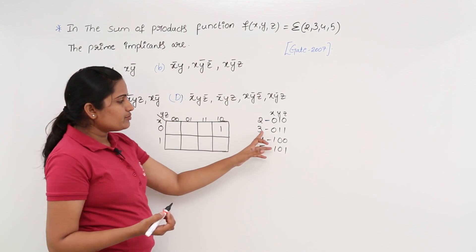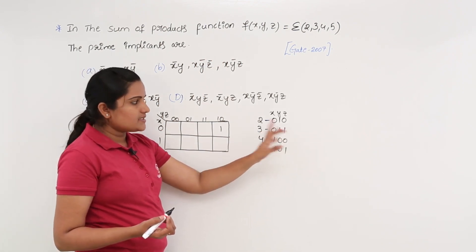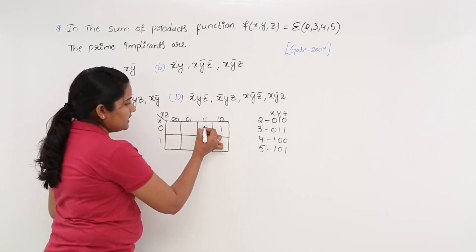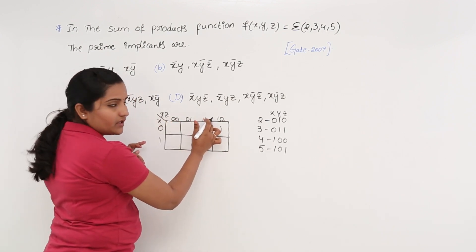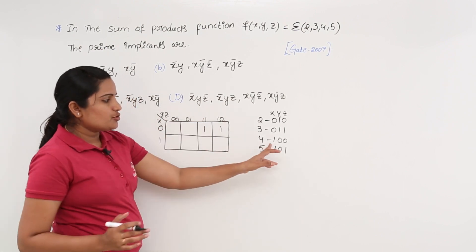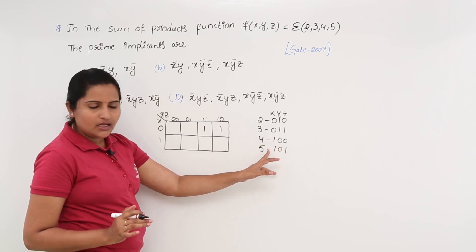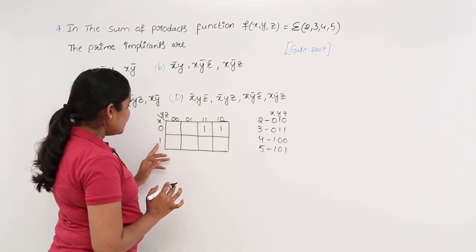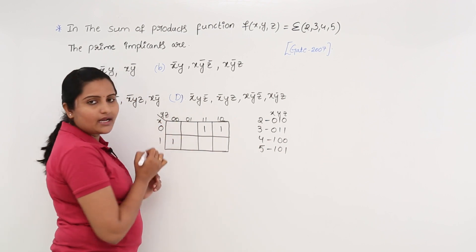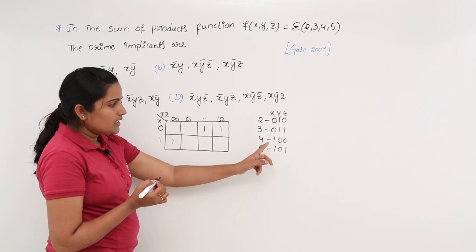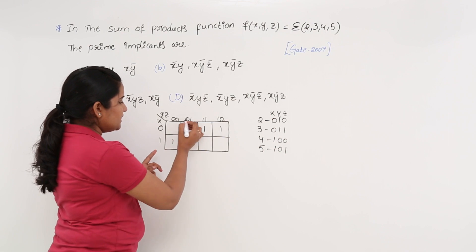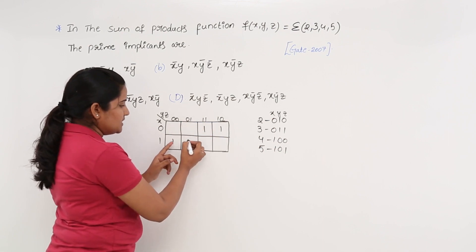To map minterm 4, which is 1,0,0: X is 1 and YZ is 00, so I place 1 in that cell. For minterm 5, which is 1,0,1: X is 1 and YZ is 01, so I place 1 in that corresponding cell. These are the minterms written in 3-bit binary code, now mapped onto the K map.